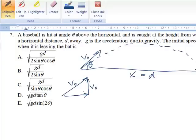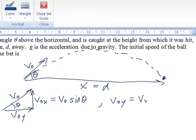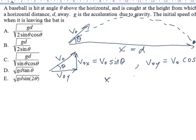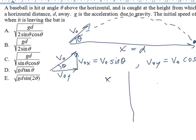v sub 0x is equal to v sub 0 times, I think it will be sine of theta. And v sub 0y will be equal to v sub 0 times cos theta. So I'm going to solve the x components and the y components separately, and then make the time equal on both sides.